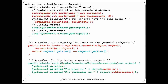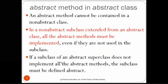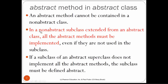Now for the theory: abstract methods can only be contained in abstract classes. In a non-abstract subclass extending an abstract class, all abstract methods must be implemented — even if they are not used. However, if a subclass does not implement all abstract methods, then that subclass must itself be abstract, allowing the constraint to be deferred.